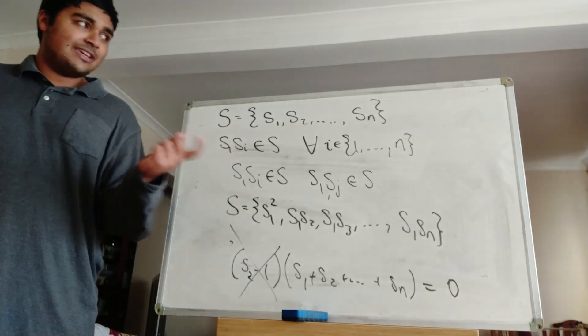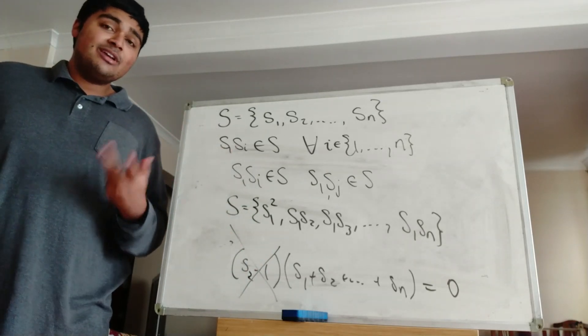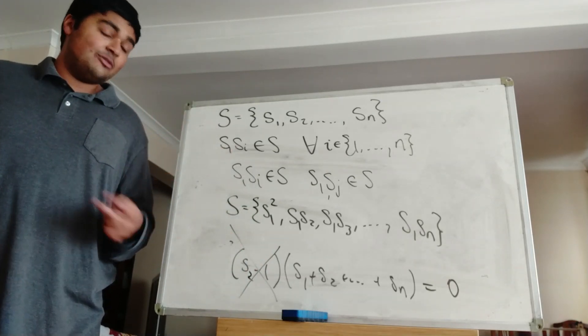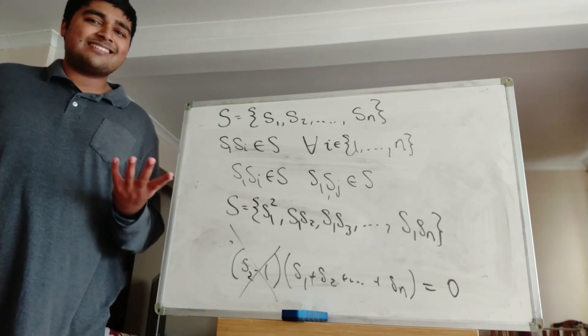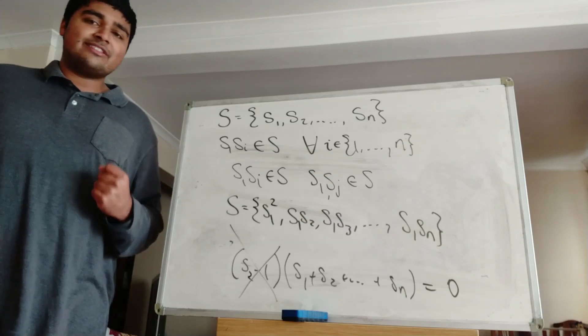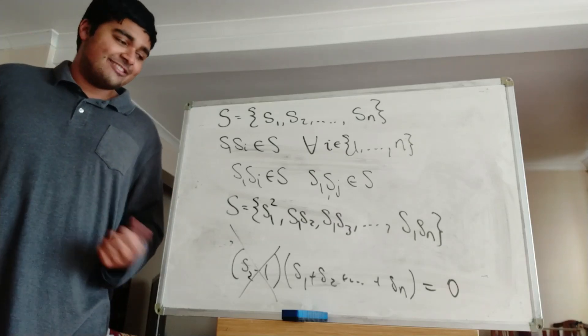And notice, I guess, one thing in particular is because N is at least 2, that means there's always two distinct elements, or at least two elements in the set. So we can always change the S1 to some other SI. And if S1 does equal 1, then we know that all the others won't equal 1.